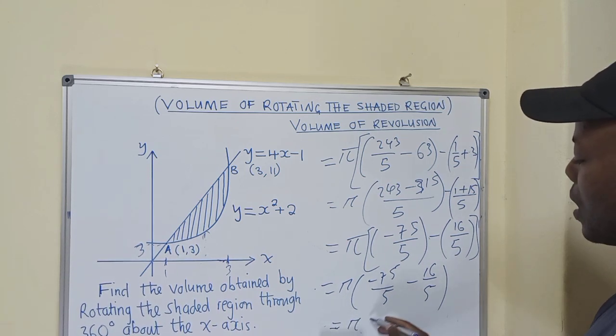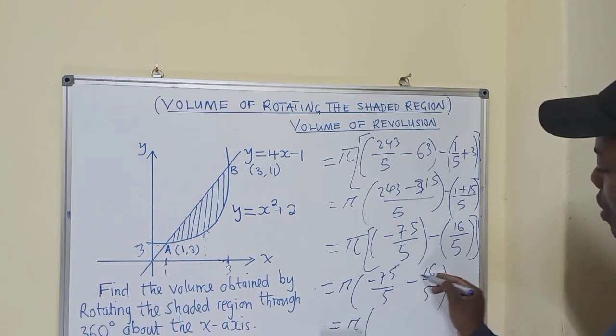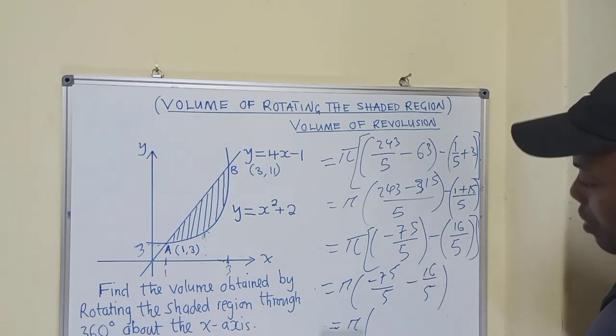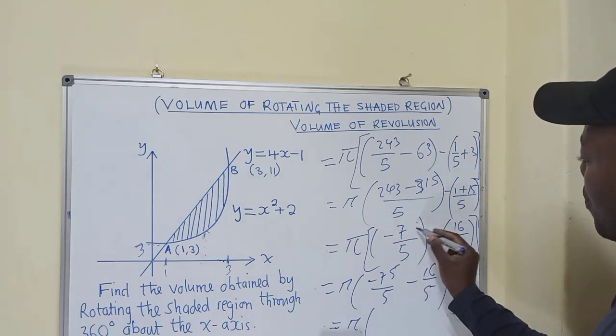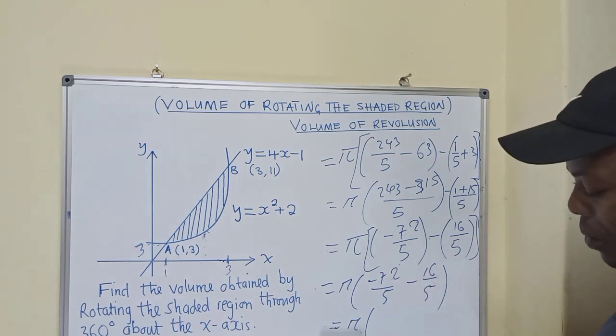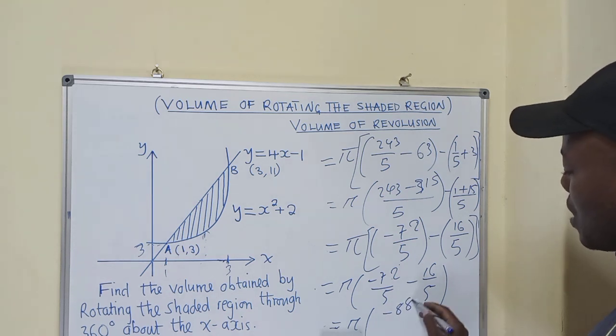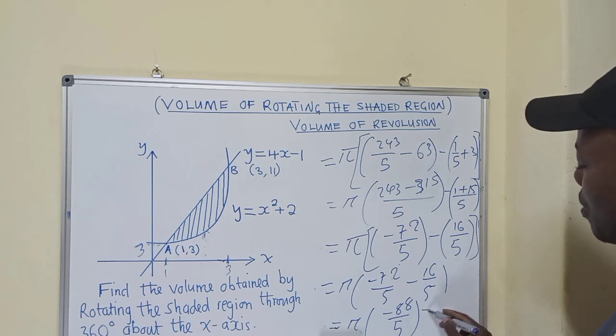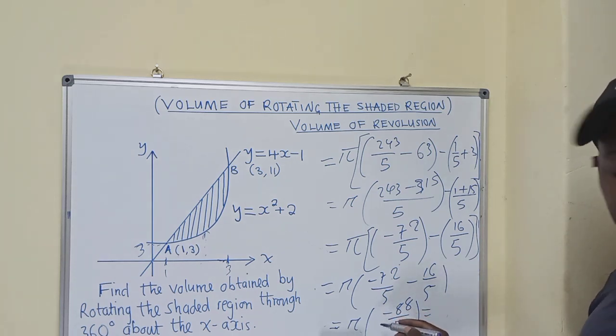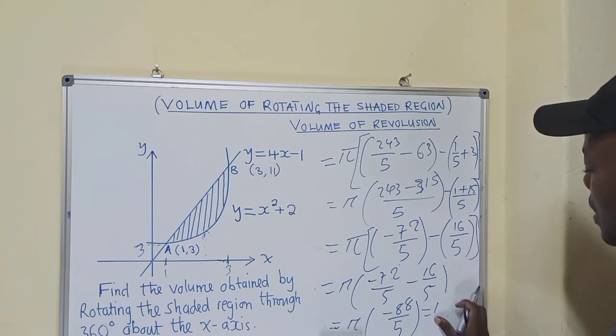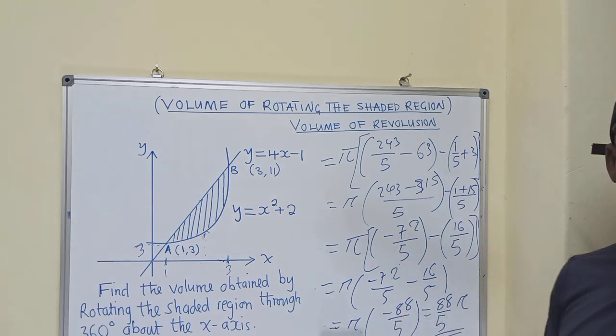So since here it's minus, you can just get rid of the brackets. So say pi negative 72 over 5 minus 16 over 5. Of which we have pi. This, since it's minus minus, so it will add. So say 72—it's 72 here. 72 minus 16 will be equal to negative 88 over 5. So your answer, since it's volume, just get rid of, forget about the negative. So the answer will be 88 over 5 pi. Forget about the negative since it's volume. 88 over 5 pi is our answer.